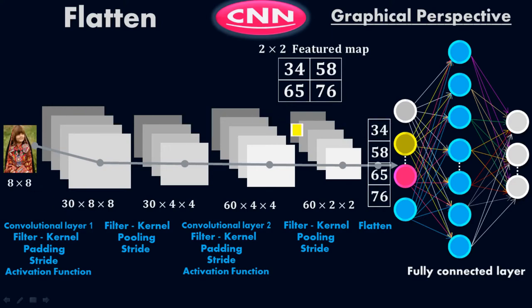From here up to here, this whole process is called feature extraction. We extract the features out of the input image — the important features — using the kernel trick, where we use filters taking different processes like padding, stride, and pooling to extract the important features out of the image, which means reducing the dimension of the input image.